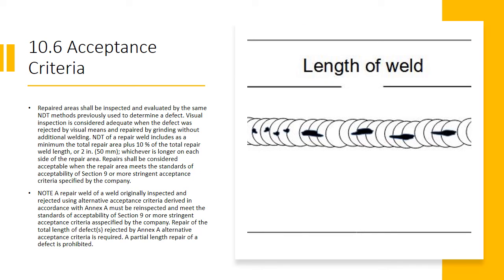Acceptance Criteria. Repaired areas shall be inspected and evaluated by the same NDT methods previously used to determine the defect. You can't switch NDT methods — for example, if ultrasonic testing was used to find the defect, you can't switch to RT for the re-inspection. A repair weld originally inspected and rejected using alternative acceptance criteria derived in accordance with Annex A must be reinspected and meet the standards of acceptability of Section 9, or the more stringent acceptance criteria as specified by the company.